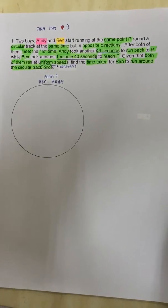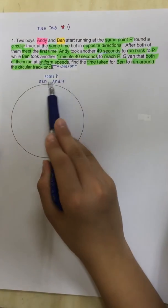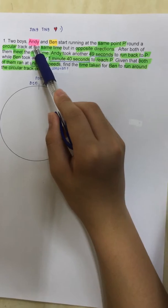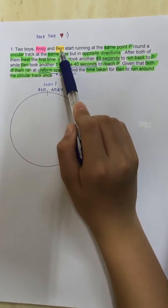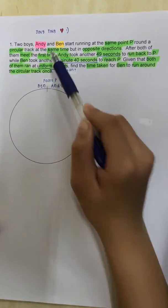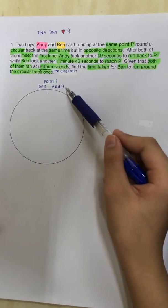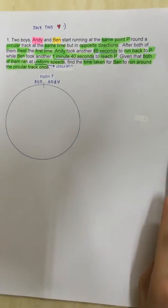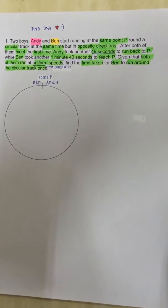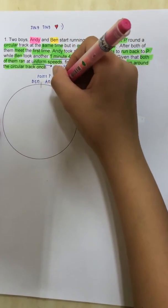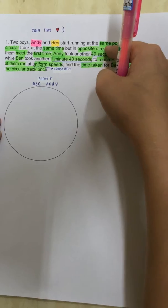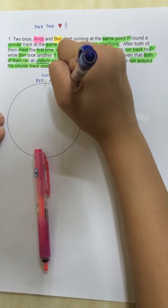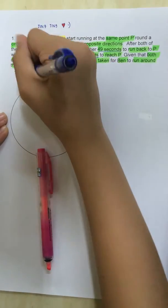So, this is the circular track. The reason I highlighted Andy in pink and Ben in orange is so you can look at it or else it will be very confusing. Andy ran in this direction because he ran in the opposite direction. So, Andy will run clockwise and Ben will run anticlockwise.